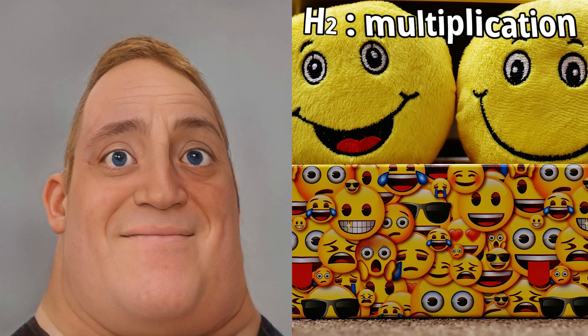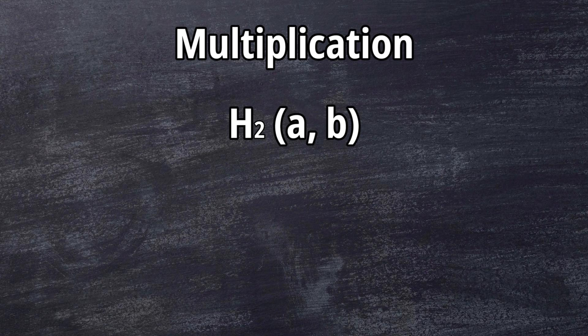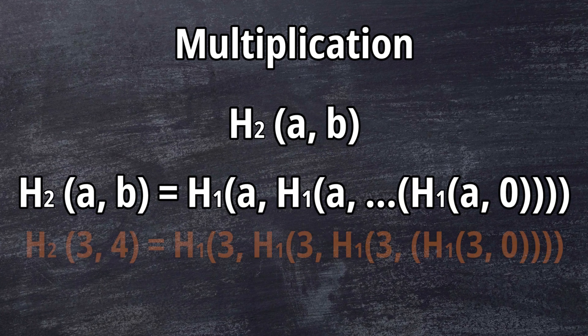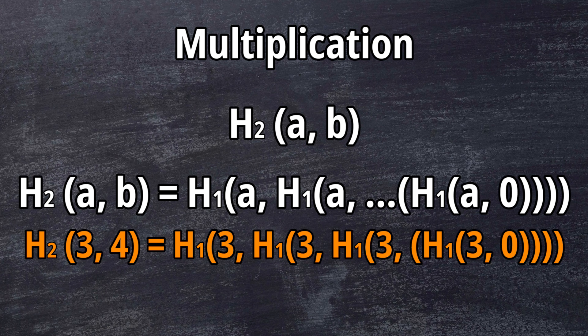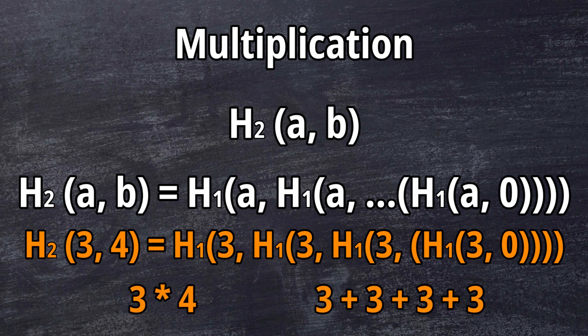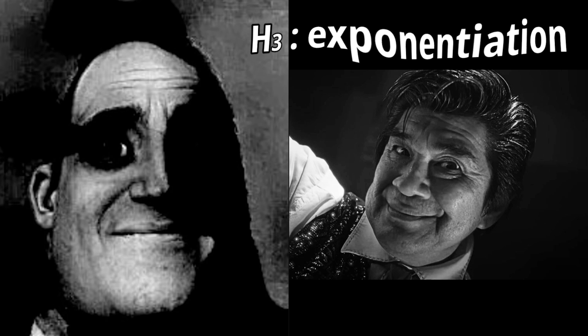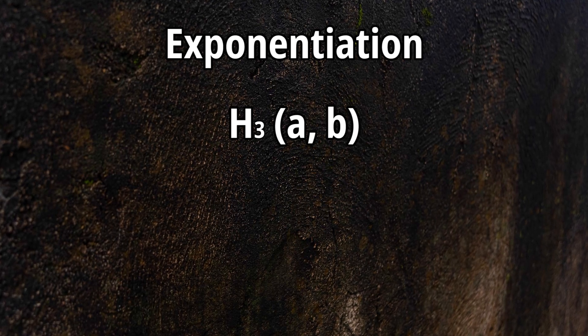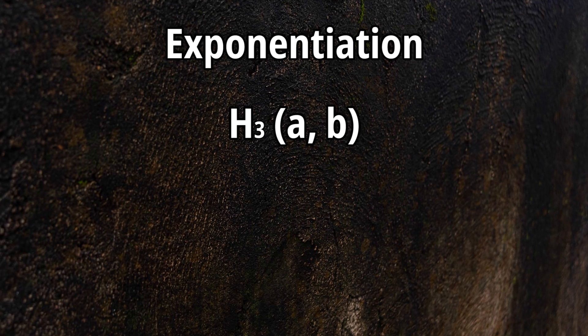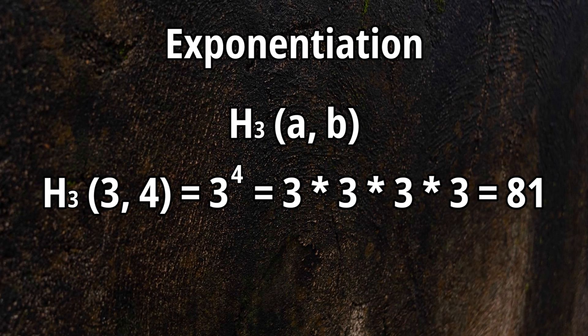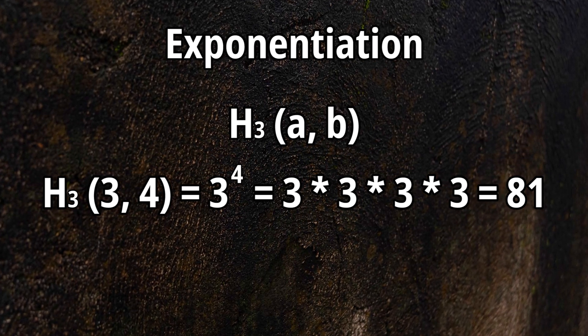I apologize for being so meticulous, but we need this cautious approach for upcoming operations. h2(a, b) is better known as multiplication, with number a being added b times. So h2(3, 4) can be rewritten as 3 × 4 or 3 + 3 + 3 + 3, which is of course 12. h3(a, b) is nothing else than exponentiation. h3(3, 4) means 3 to the 4th power, or 3 × 3 × 3 × 3, which equals 81.